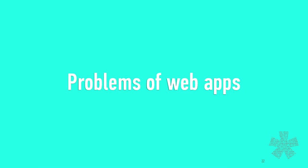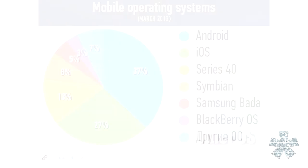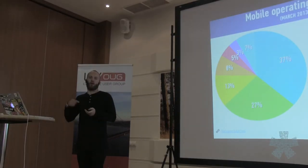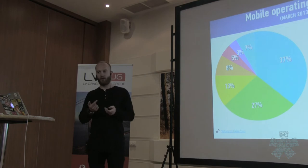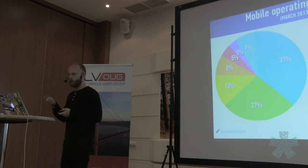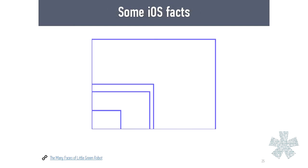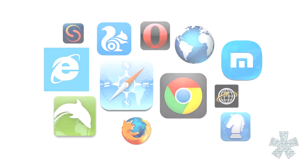Let's go with the problems of web applications right now. We have mobile operating systems on the market — Android, iOS. We also have different Android screen sizes and resolutions. For iOS, probably we can add one more screen for iPhone 5. And different browsers as well.